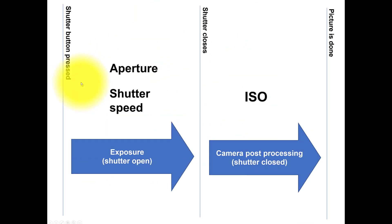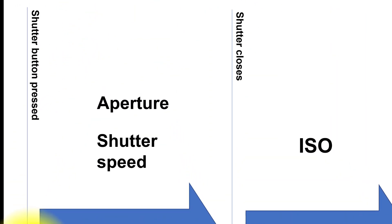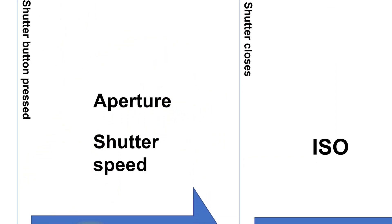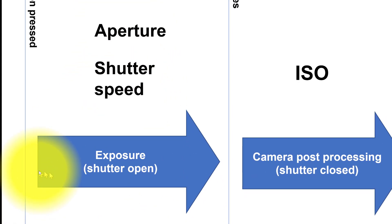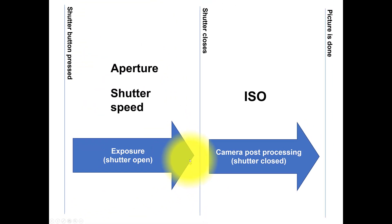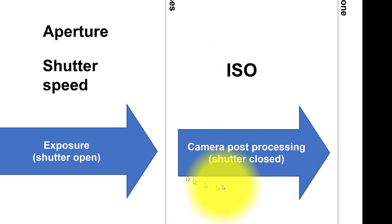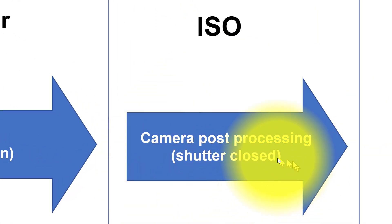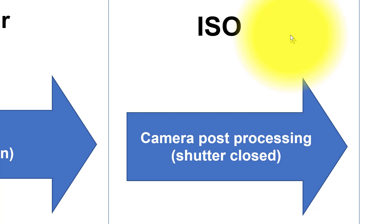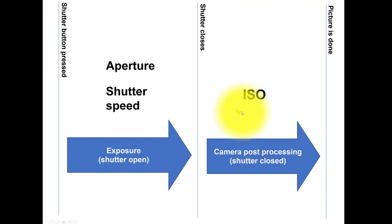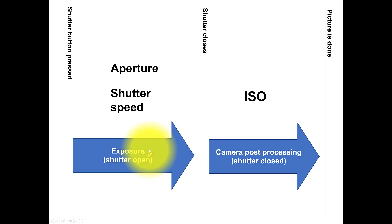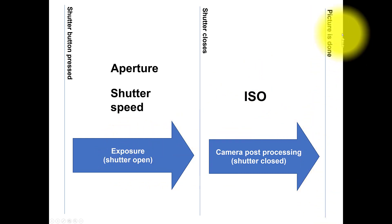When you press the shutter, the exposure starts: the shutter opens, and the aperture and shutter speed determine how much exposure the sensor gets to the light. Then the shutter closes and the camera starts post-processing. In that process you can configure many things that influence how the camera works, but ISO is one of them. It is a factor that is applied to what is being read on the sensor, and when that is applied, the picture is done.